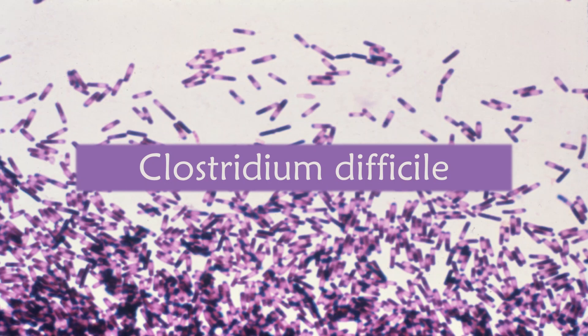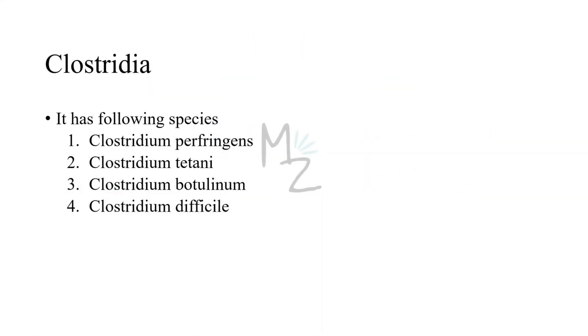Grab a pen and a notepad and let's get started. The Clostridia genus has four major species that I have covered — three previously and today the fourth one.